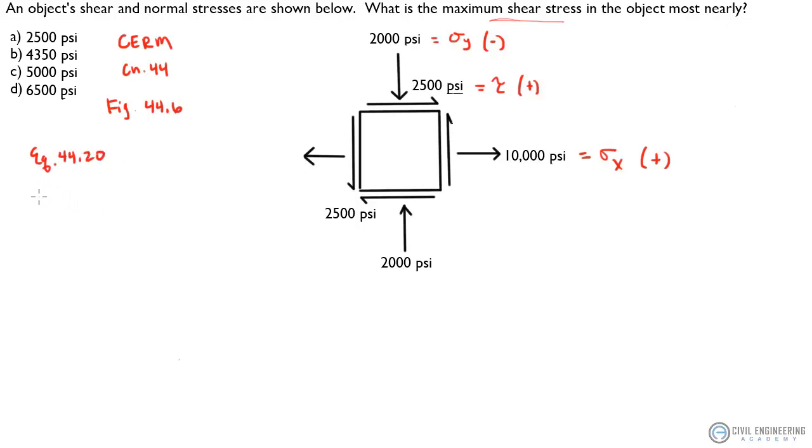And that tells us that our shear max is equal to plus or minus, that's max or min, one half, the square root of this big old beautiful thing: square root of our stress in the x direction, minus our stress in the y direction, that's all squared, plus two times your shear, and that's all squared.